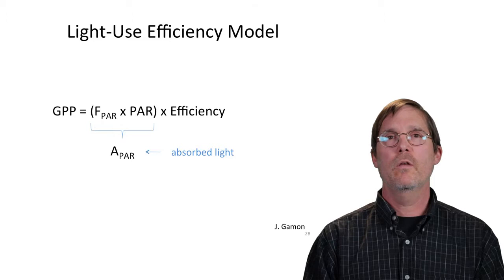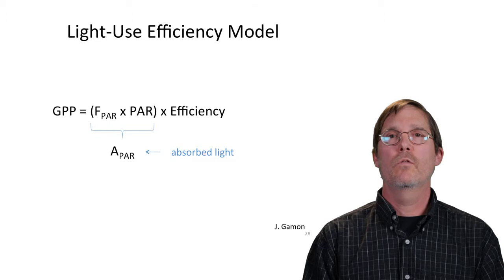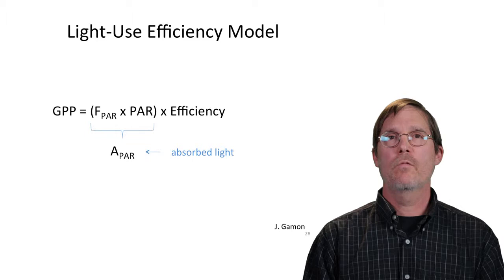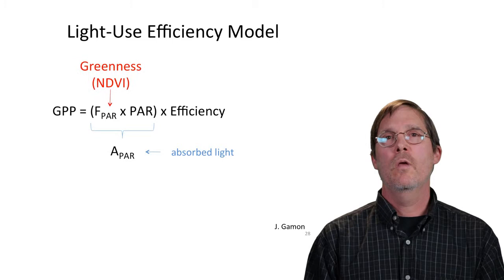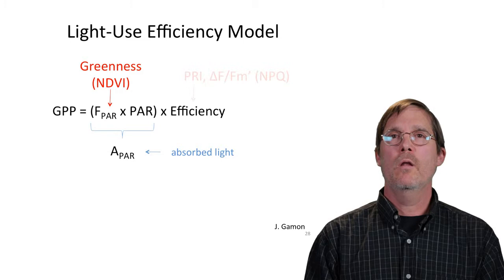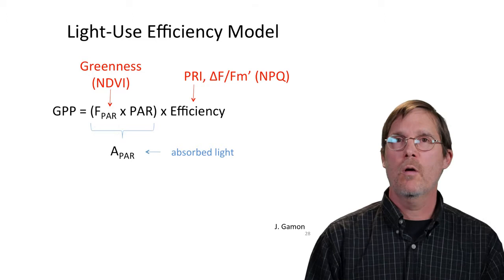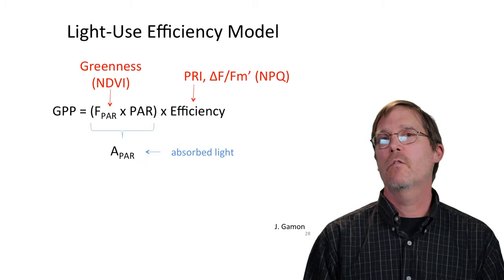One way to do this is to put the PRI signal into a light use efficiency model, where photosynthetic uptake is a function of absorbed light times the efficiency with which absorbed light is used for photosynthesis. The absorbed light term (APAR) is a product of photosynthetically active radiation and the fraction of that radiation absorbed by green plant material. The efficiency term on the right is where we ask: can we use PRI or fluorescence to measure the non-photochemical quenching process and seasonally/diurnally changing light use efficiency?